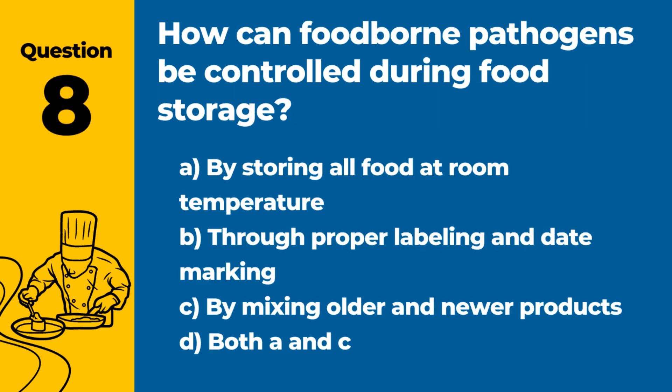Question 8. How can foodborne pathogens be controlled during food storage? Answer: B. Through proper labeling and date marking. This helps in following first-in, first-out (FIFO) practices, and keeping food out of the temperature danger zone.